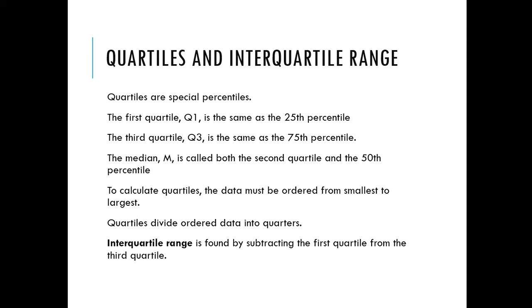So the first quartile is the same as the 25th percentile. That means 25% of your data at the first quartile is there and below. The third quartile represents that data value and 75% of the data is below it.